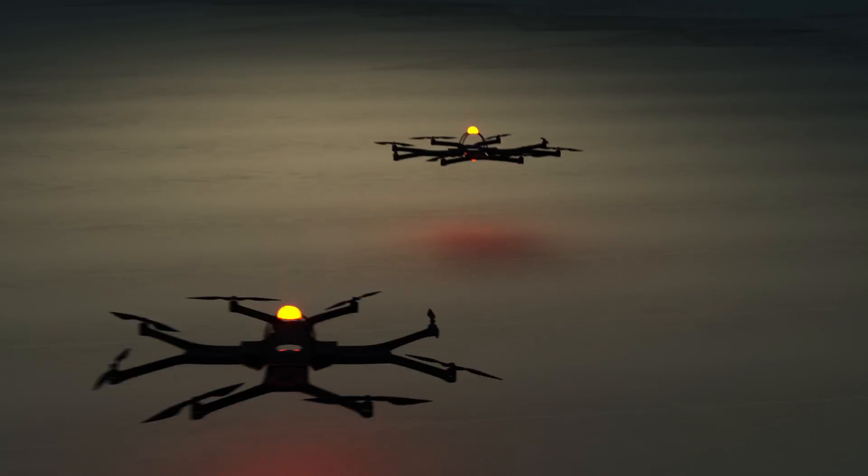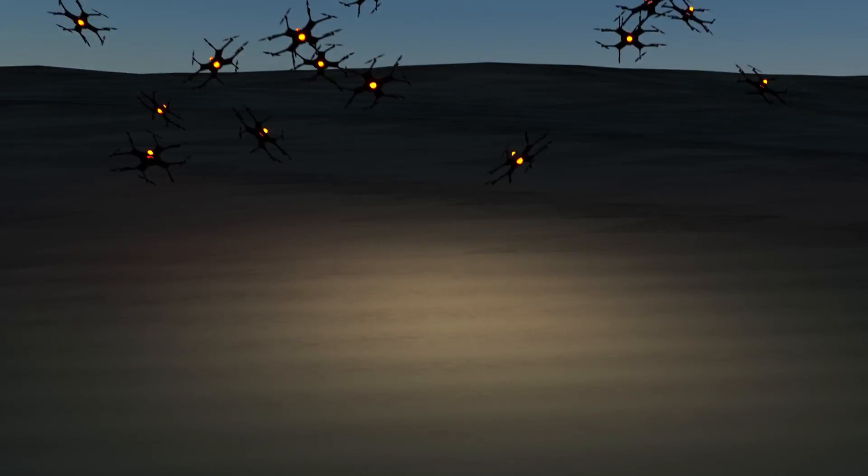This isn't quite swarm intelligence because the drones aren't communicating with one another. The operator's computer sends out instructions to each drone in the swarm. Those instructions tell the drone where it needs to be and give it the instructions to follow the specific sequence of moves. That means you need to plot out the full sequence on the ground well before drones take to the sky.